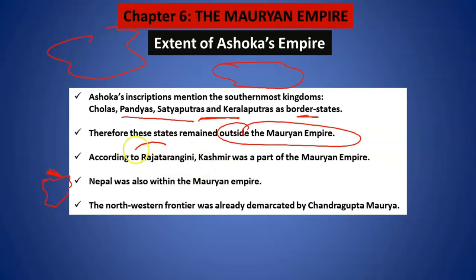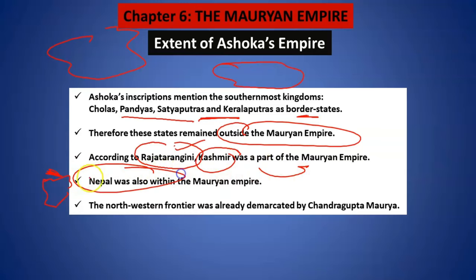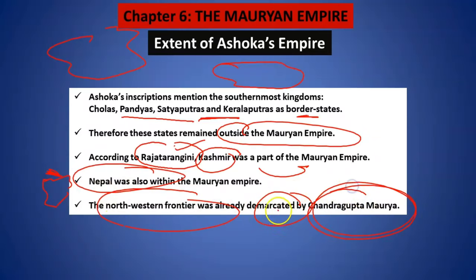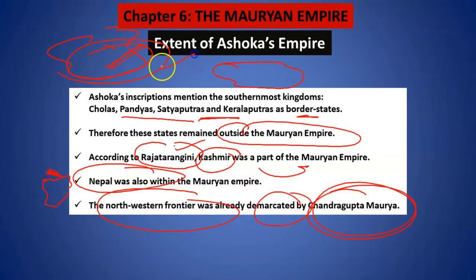These southern states were outside the Mauryan empire. According to Rajatarangini, Kashmir was a part of the Mauryan empire. Nepal was also a part of the Mauryan empire. The northwestern frontier was already captured by Chandragupta Maurya. So that means we can say that almost the entire India was a part of the Ashokan empire — that was a very great achievement in ancient Indian times.